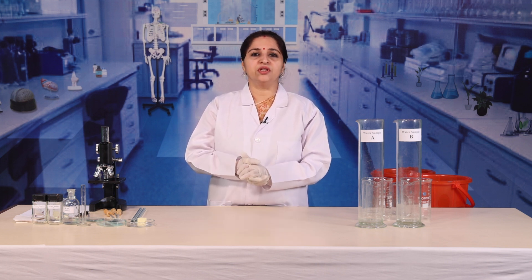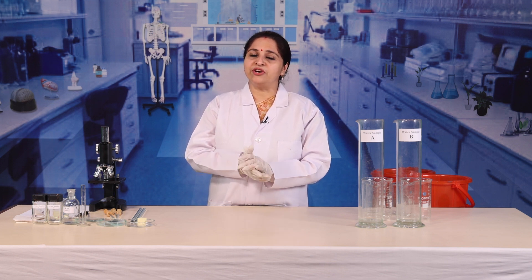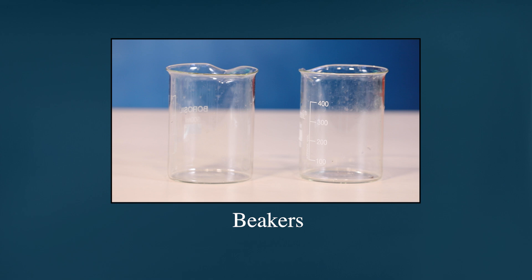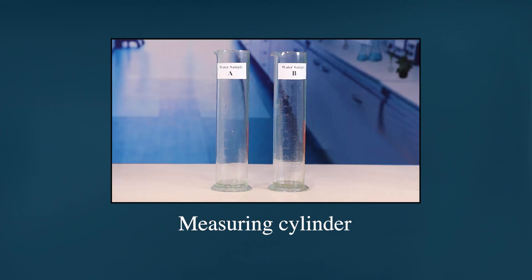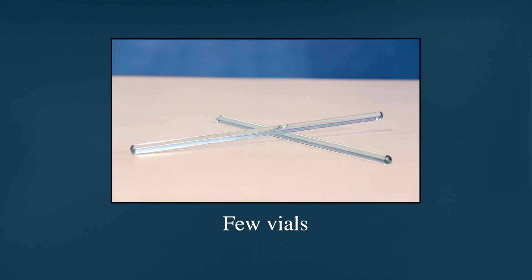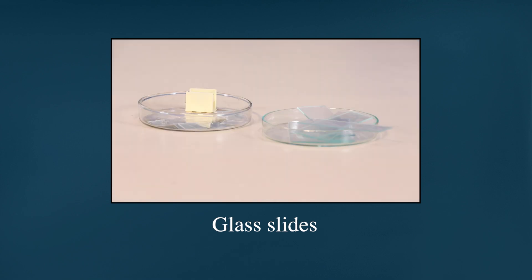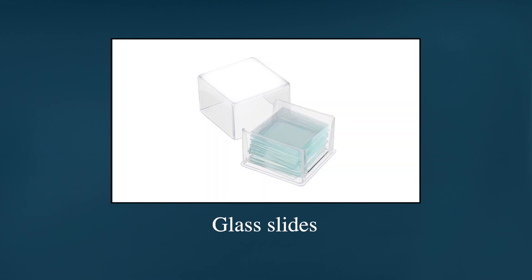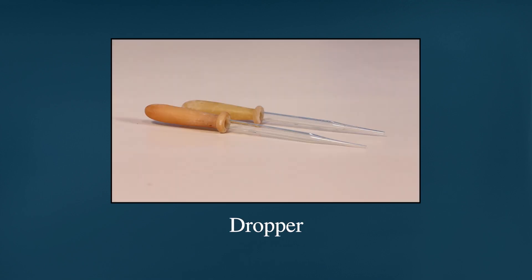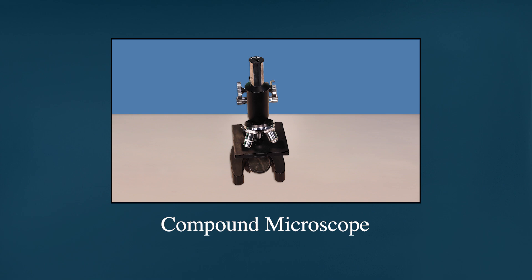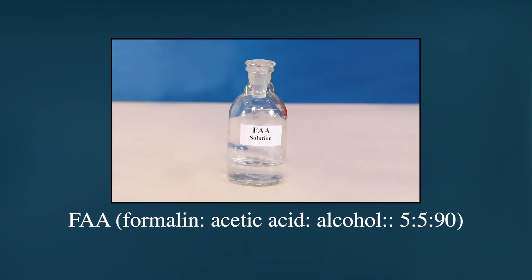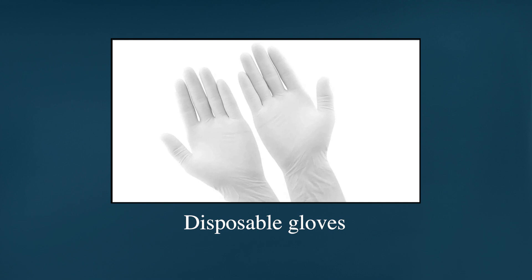The materials required for this session are: water samples from different water bodies nearby you, beakers, measuring cylinders, few vials, test tubes, glass slides, cover glass, dropper, compound microscope, and FAA — a mixture of formalin, acetic acid, and ethanol in a 5:5:90 ratio — and disposable gloves.